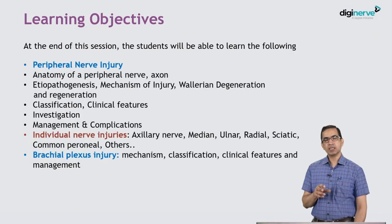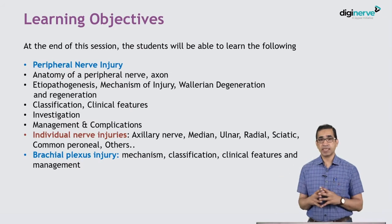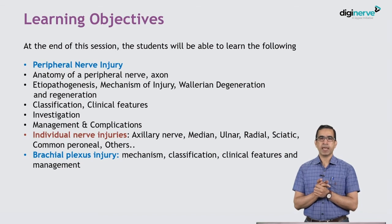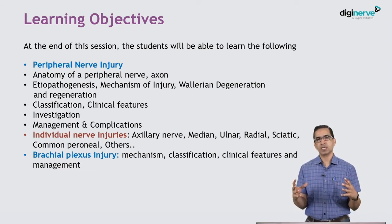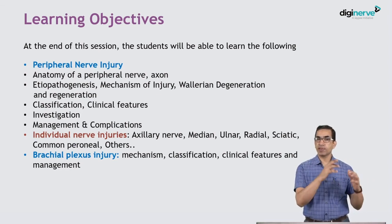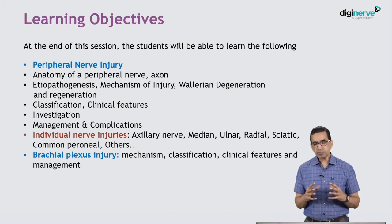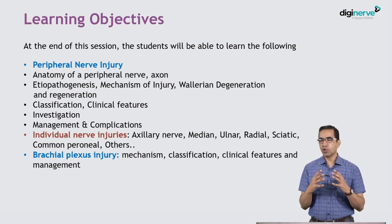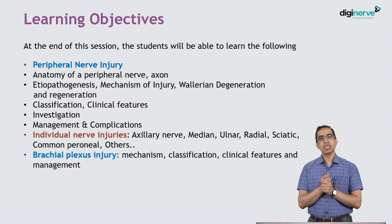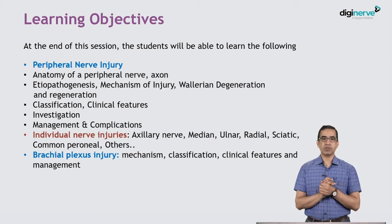Not only peripheral nerve injury, but in this session we will also cover partly the brachial plexus injuries. We will try to understand the peripheral nerve and their brief anatomy, as I love to do every time, because I always believe that if you have understood the anatomy and pathogenesis — how the disease evolves — it is extremely easy to understand the clinical features.